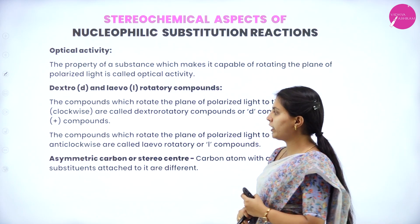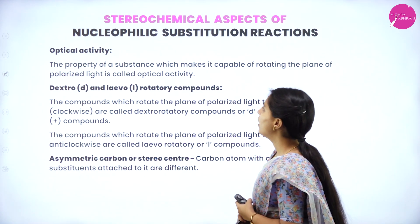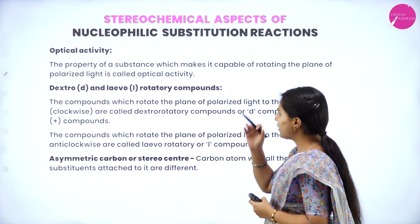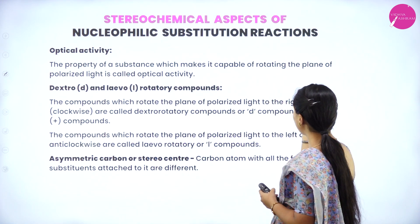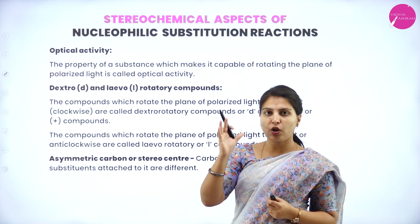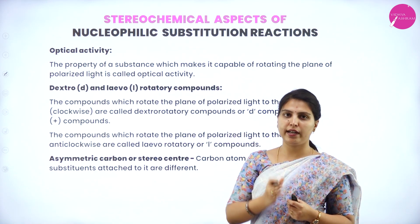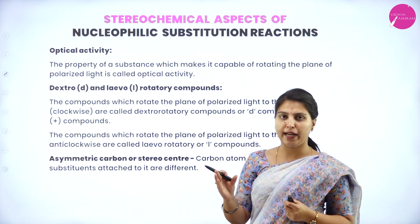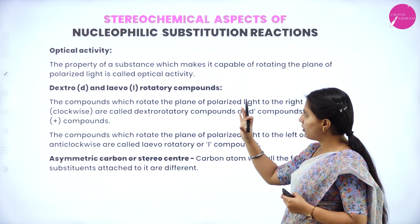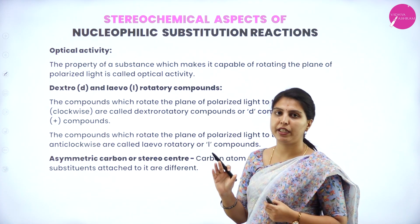The overall phenomenon is called optical isomerism. In that, you have to understand optical activity, dextro and levorotatory compounds, and asymmetric compounds. The property of a substance which makes it capable of rotating the plane polarized light is called optical activity. If a compound rotates either from the right side or left side through the plane polarized light, that overall property is called optical activity.